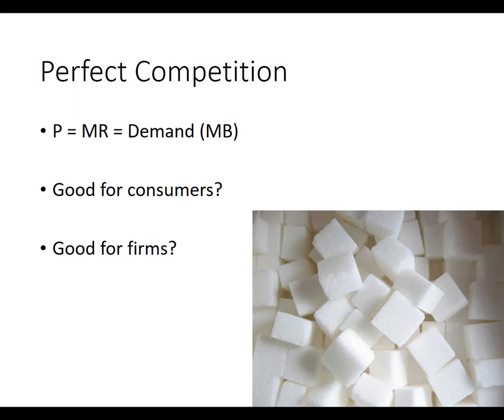So we've learned about perfect competition. Just to recap: in a perfectly competitive market like the sugar cube market, price is going to equal marginal revenue, which is going to equal the marginal benefit, which we measure as demand. This is really good for consumers. Consumers get a low price and an identical product, something that they're looking to get.